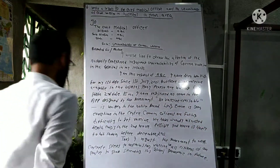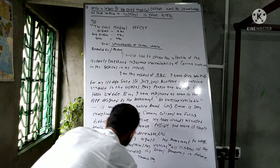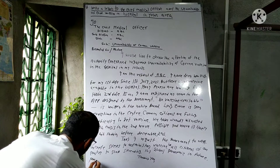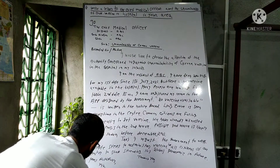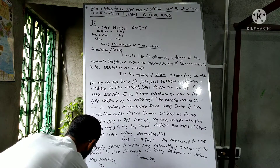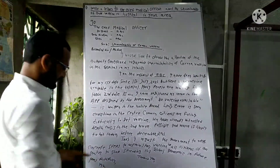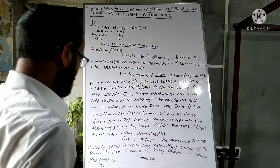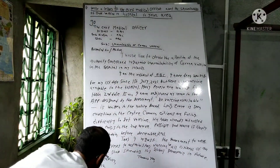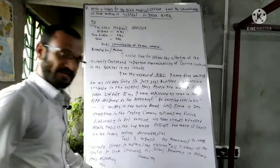Then write 'Thanking you,' followed by 'Yours faithfully,' a comma, then your name (XYZ), today's date — that is 26th July 2021 — your place, and your mobile number.